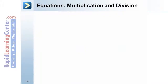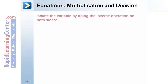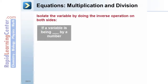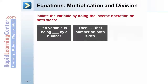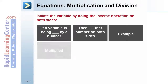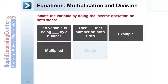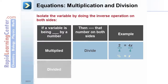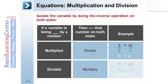For equations involving multiplication and division, isolate the variable by doing the inverse operation on both sides. If a number is being multiplied with a variable, divide by that number on both sides. If a number is dividing a variable, multiply by that number on both sides.